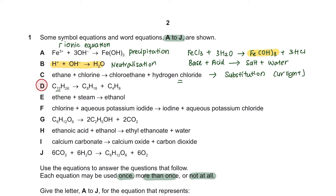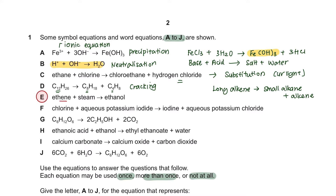Equation D shows a long chain of carbon breaking down into smaller chain alkanes and alkene — this is a cracking process. Equation E shows an alkene reacting with steam to form alcohol. This is from the organic compounds chapter on alcohol, and this process is called hydration.